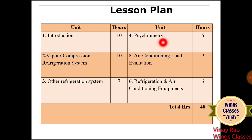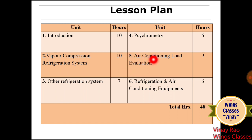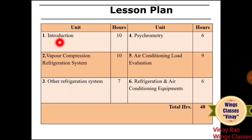Unit 4 is Psychrometry, covering terms like wet bulb temperature, dry bulb temperature, specific humidity, psychrometric chart, and psychrometric processes. Unit 5 is Air Conditioning Load Evaluation — basically psychrometric load calculation problems. Unit 6 covers Refrigeration and Air Conditioning Equipment. These are the total six units.